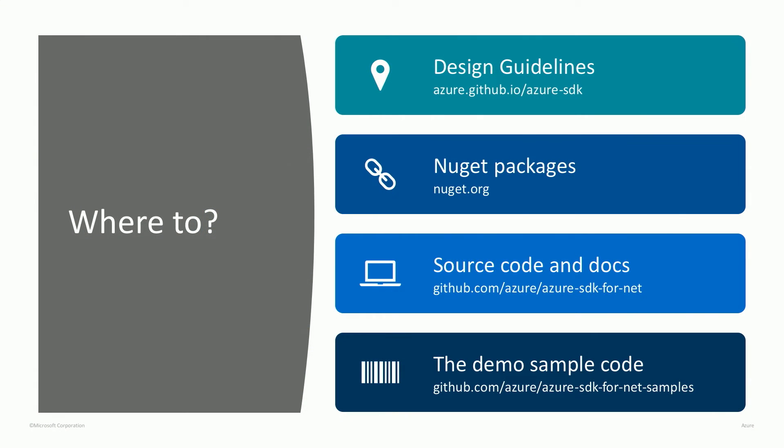In the same line of consistency, we're coming up with new packages in a consistent way. All the packages will have the same prefix — they all start with 'Azure' — so you can search on NuGet or your other package manager and they all look the same and are easy to find. Our guidelines are all open source on GitHub. You can find NuGet packages on NuGet.org, and the source code and docs are all available in the open as well. There's also a demo with source code available.